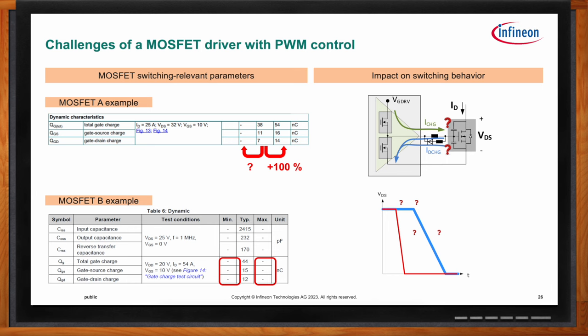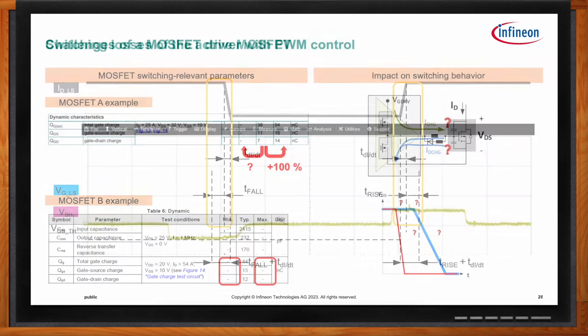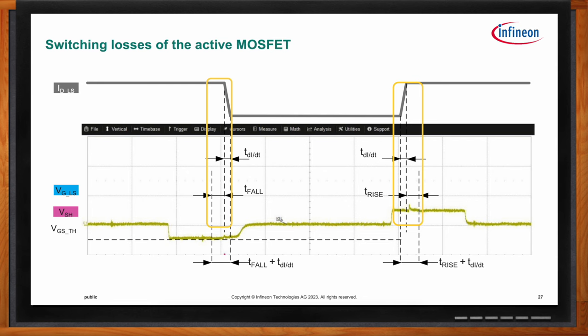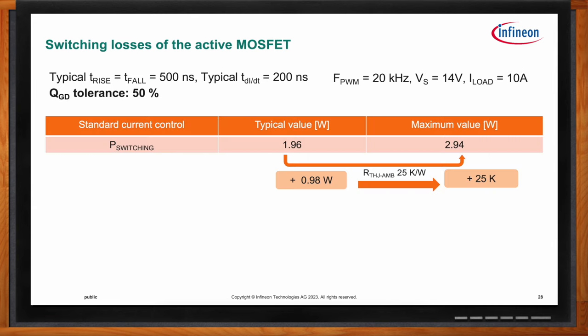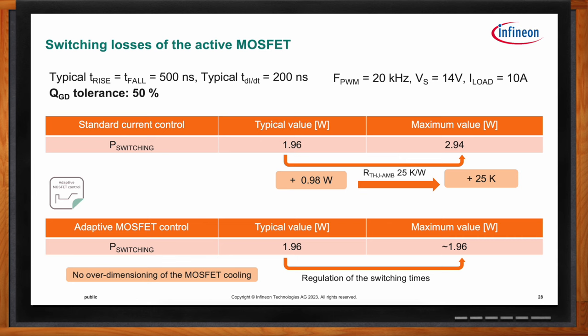Most heat and power dissipation is created during the switching phase — the steepest part of the curve from off-state to on-state. Switching times are proportional to MOSFET gate charge. Adaptive MOSFET control's closed-loop regulation compensates for these tolerances. For example, the difference between typical and maximum gate charge values amounts to about one watt of extra switching losses — roughly 25 Kelvin of temperature rise. Adaptive MOSFET control self-adjusts until the desired timing is achieved, so a typical device and a maximum device behave the same way, saving approximately one watt of power.